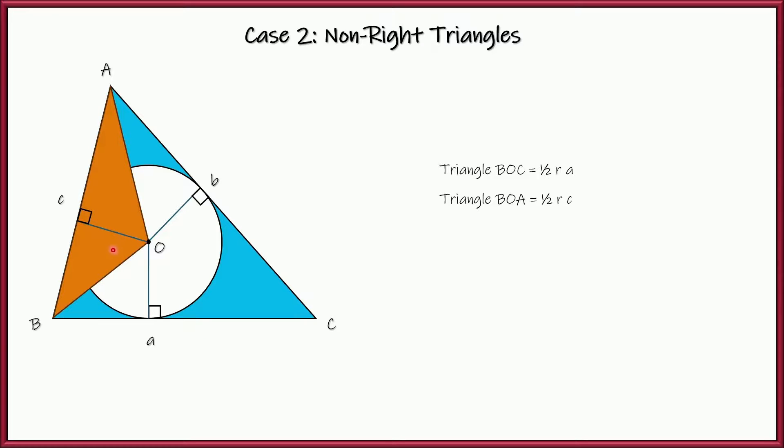The height is the perpendicular distance to the base. So the height here is R. The base is AB. And let's do it once again for angle AOC. So AOC is one-half R times side B. All three of those triangles add up together to make the area of the entire triangle ABC, as you can see.